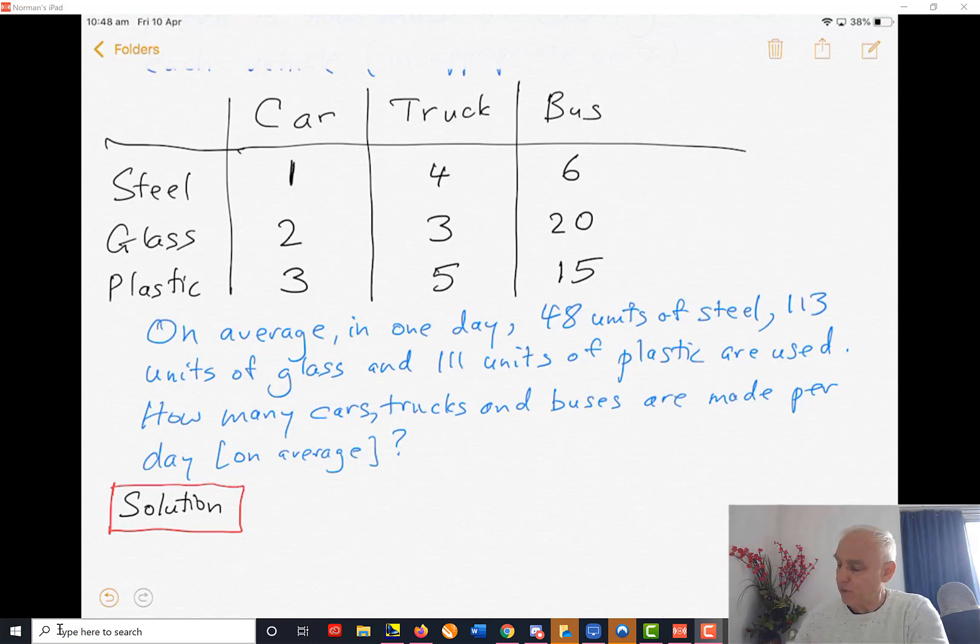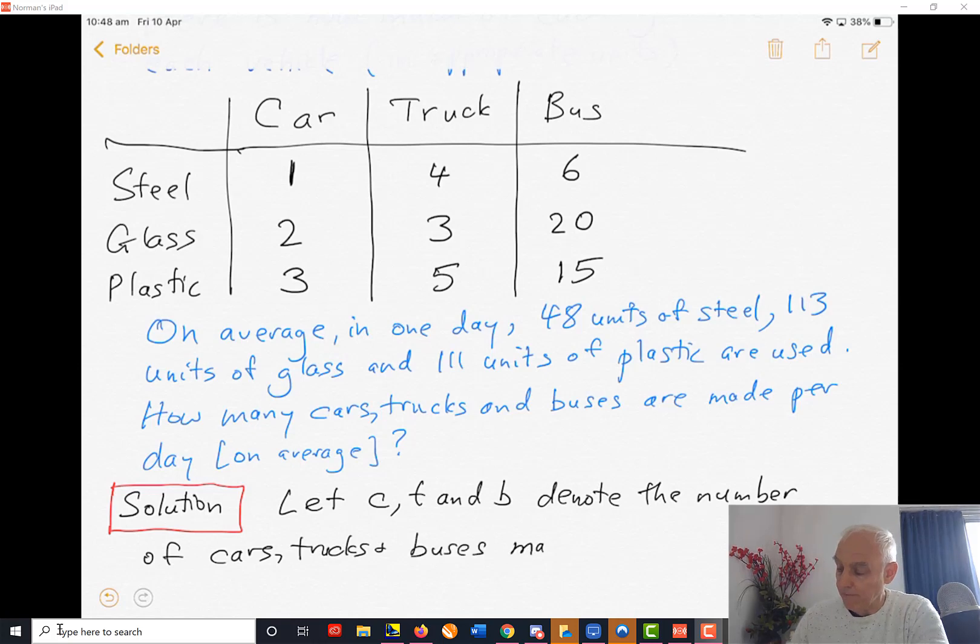So how are we going to solve this? The first thing we're going to do is introduce some variables to denote the quantities that we're interested in: the number of cars, trucks, and buses made per day. Let C, T, and B denote the number of cars, trucks, and buses made per day respectively.